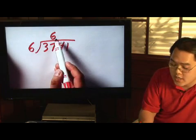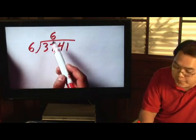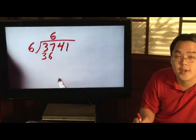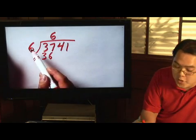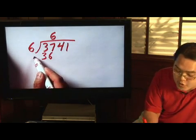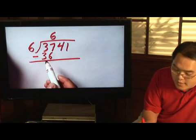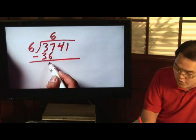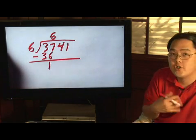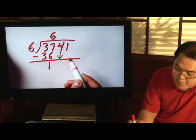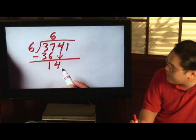After that, you take the 6 and you start multiplying. 6 times 6, you already know, is 36. So after you multiply, you're going to go ahead and subtract. 37 minus 36 is 1. Now, after you do the subtraction, you bring down the next number. So in this case, you're going to bring down the 4.